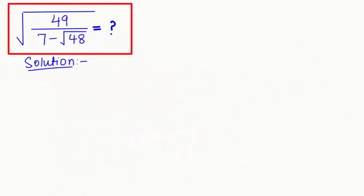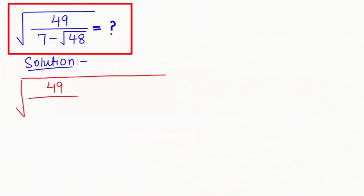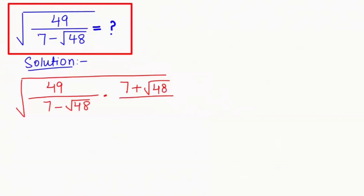In the first step I'm going to rationalize the denominator by taking the conjugate of the denominator, that is 7 minus root of 48. So I'm going to multiply by 7 plus root of 48 over 7 plus root of 48.